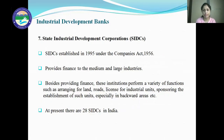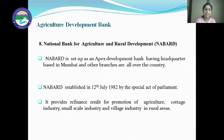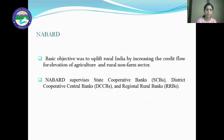Next comes the Agriculture Development Bank, which includes the National Bank for Agriculture and Rural Development — NABARD. NABARD was established on 12th July 1982 by a special act of parliament to bring agriculture reforms in India. It provides refinance credit for the promotion of agriculture, cottage industry, small-scale industry, and village industry in rural areas. The basic objective of NABARD is to uplift rural India by increasing credit flow for agriculture and rural non-farm sectors. NABARD also supervises state cooperative banks, district cooperative central banks, and regional rural banks.